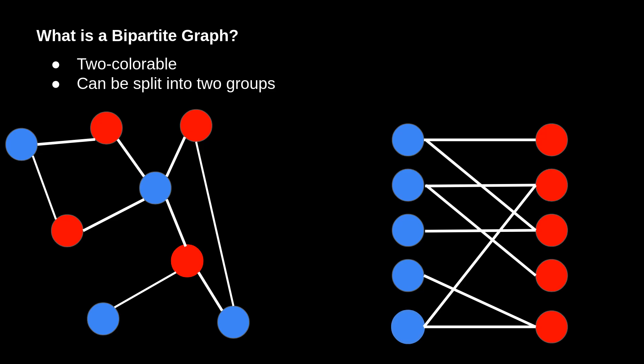Let's get into the first application of network flow called the bipartite matching problem. Before we tackle the problem directly, let's get a shared definition of what it means for a graph to be bipartite. Oftentimes, when trying to define bipartiteness, it's useful to consider two-colorability, since they are the same thing. If a graph is bipartite, it is also two-colorable, and if a graph is two-colorable, it is also bipartite.